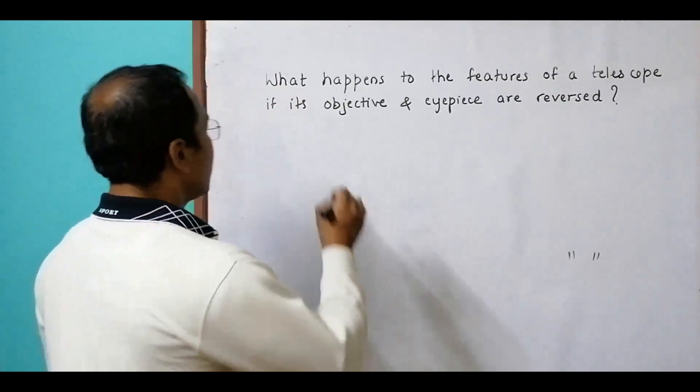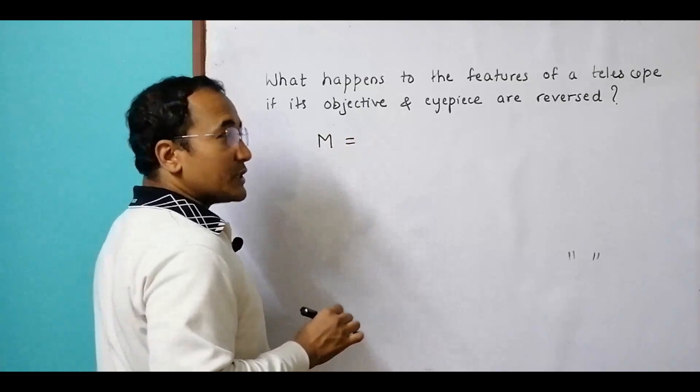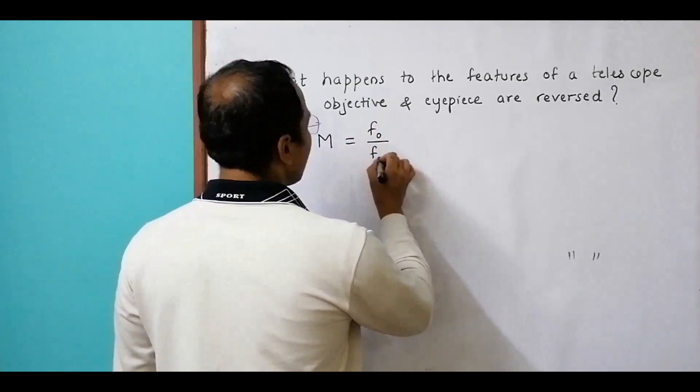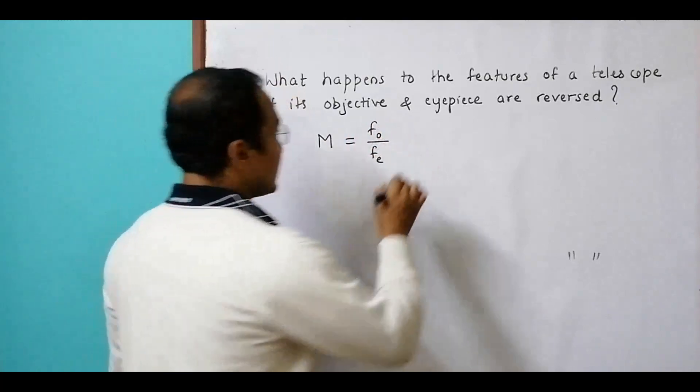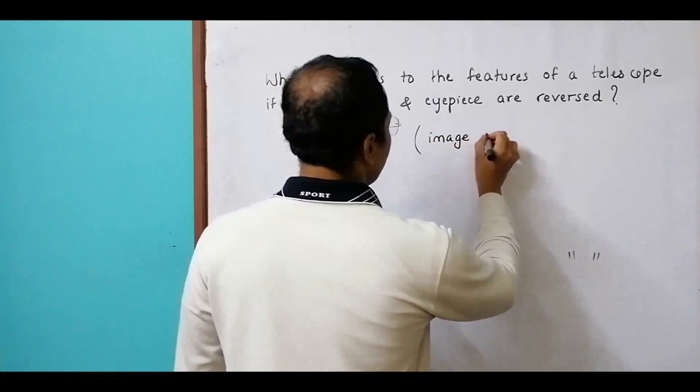The magnification of the telescope becomes equal to focal length of objective lens divided by focal length of eyepiece lens. So M = fo/fe. This happens when the image is at infinity.